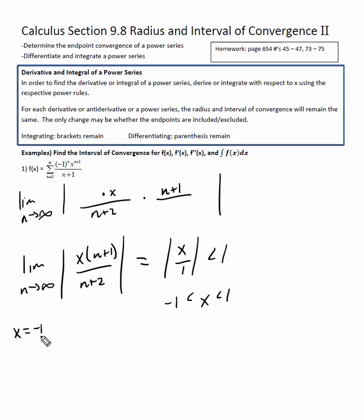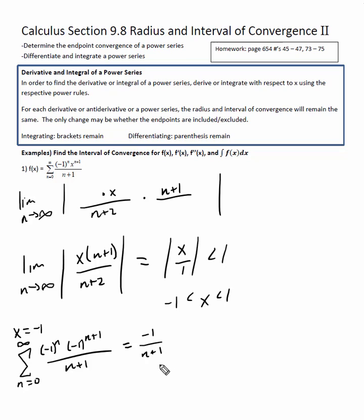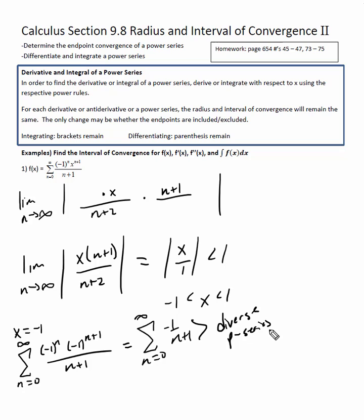We're going to let x equal negative one first and plug it into our summation. From n equals zero to infinity, we get negative one to the n times negative one to the n plus one over n plus one. This equals the summation of negative one over n plus one, because negative one to the n times negative one to the n becomes negative one to the two n, which is positive, so only negative one over n plus one remains. By the p-series test, this is going to diverge.